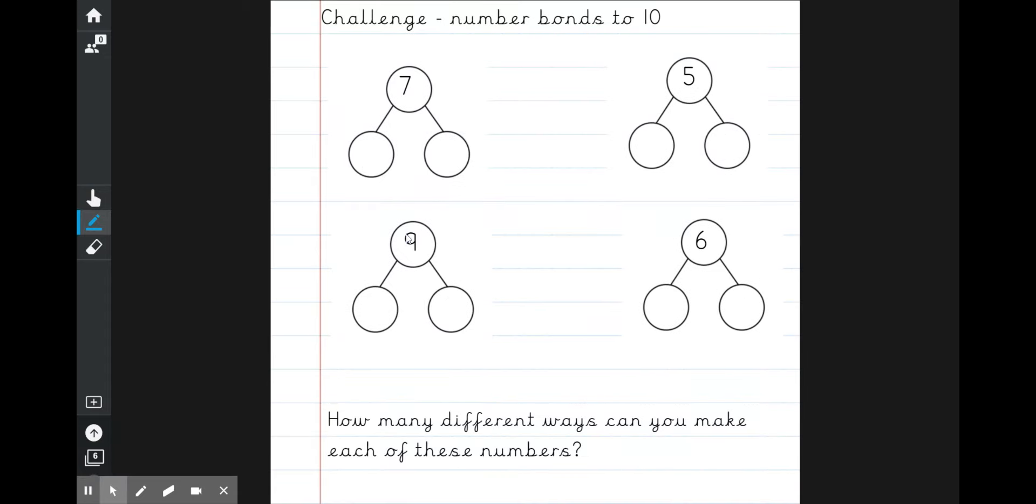And a super challenge on the board, we've got four part whole models here with numbers 7, 5, 9 and 6. How many different ways can you make each of these numbers? So how many ways can you fill this in to make seven, we could have zero and seven, we could have six, and one more make seven, how many different ways can you solve them? Can you find to make the numbers? Which of these numbers are there the most ways that you can find? We have a little look, can you compare the numbers and see which one has the most ways to make it? And can you work out why that is? And that's your super challenge.